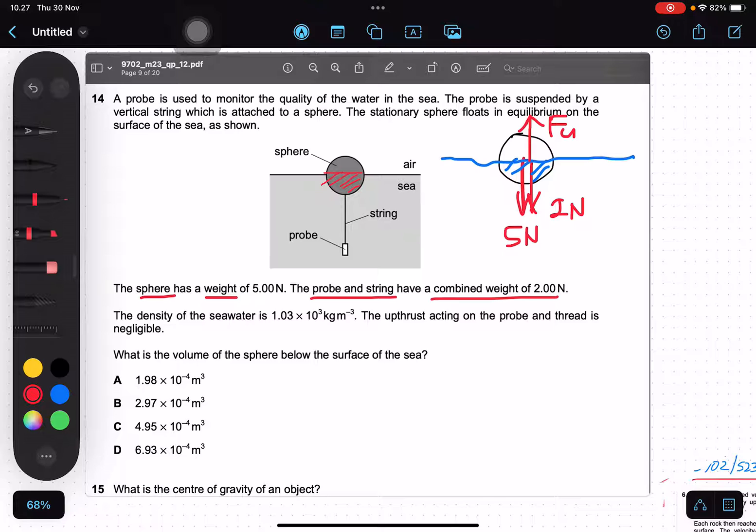On the equilibrium, force upthrust equals to 5 plus 2, which is the weight of sphere and the combined weight of probe and string, 5 plus 2.